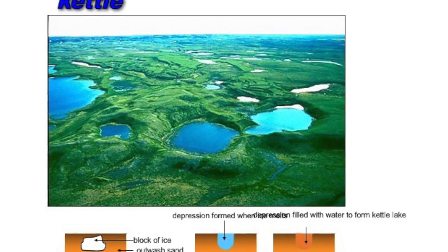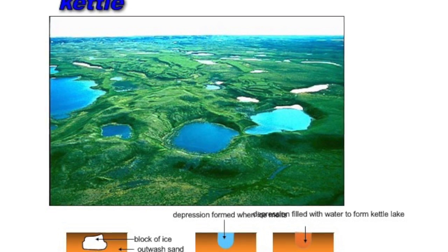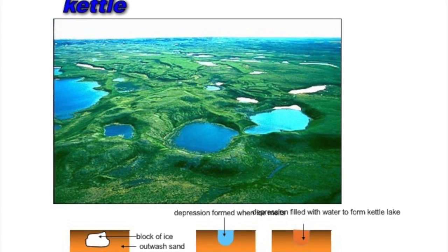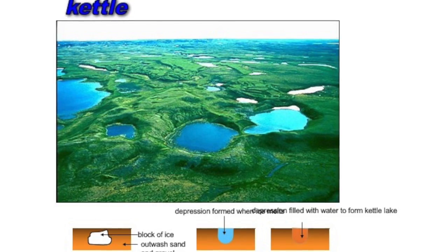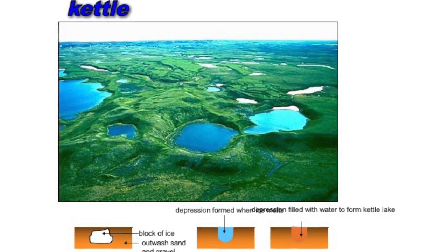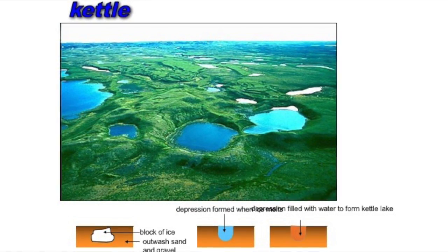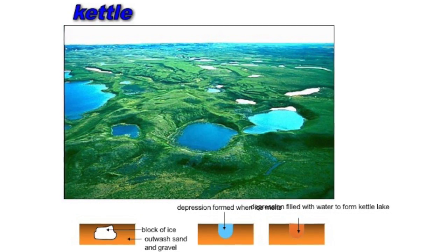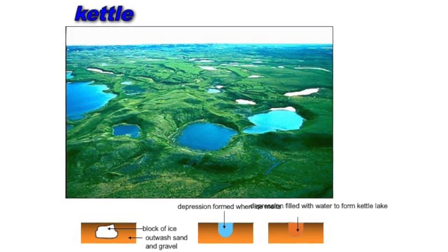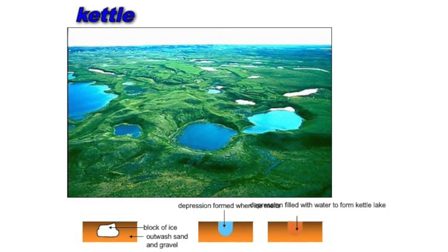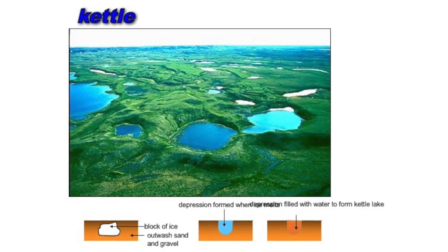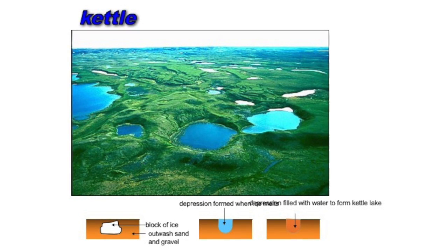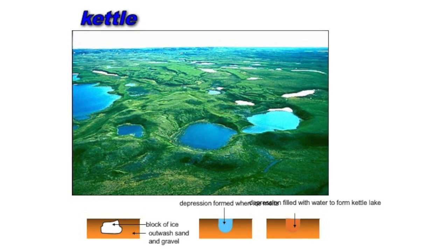Kettle holes, as we can see here, are formed by a block of ice that becomes separated from the main glacier. The weight of the ice becomes too heavy for the sediment it's sitting on, and eventually it leaves huge depressions. These depressions can fill with water, in which case they become kettle hole lakes — Lough is a really good example of a kettle hole lake.